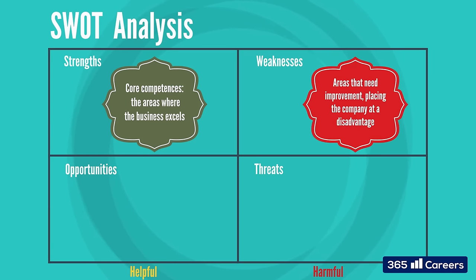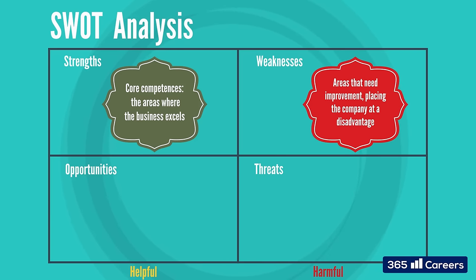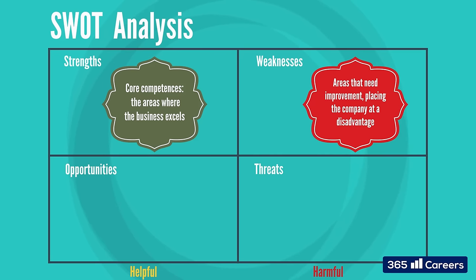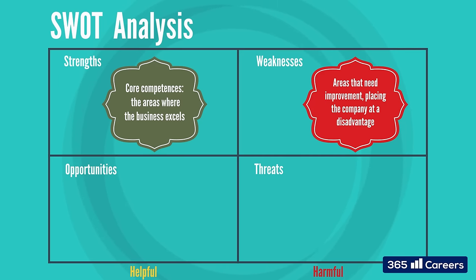Weaknesses are areas that need improvement. Such vulnerabilities place a company at a disadvantage when competing against other firms. Usually, the disadvantage results from other companies having a competitive advantage. An example of a weakness is a higher cost structure.